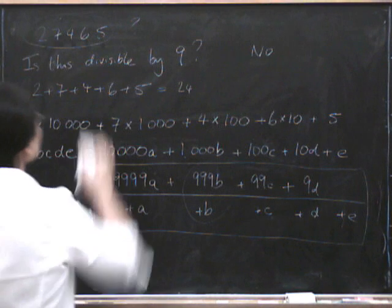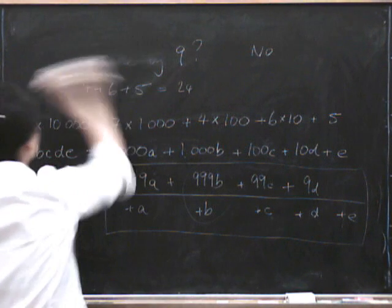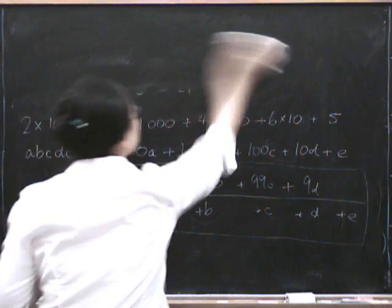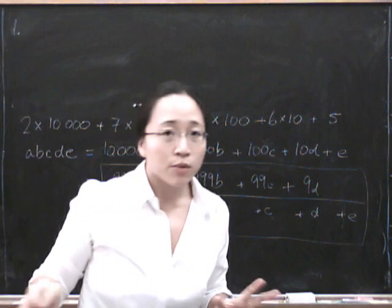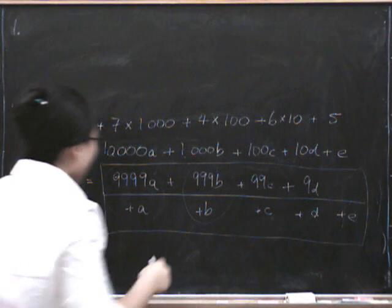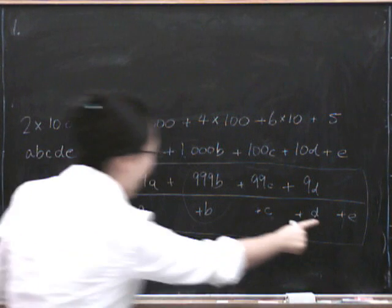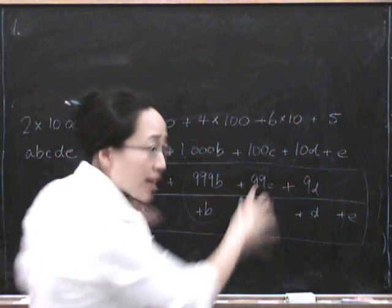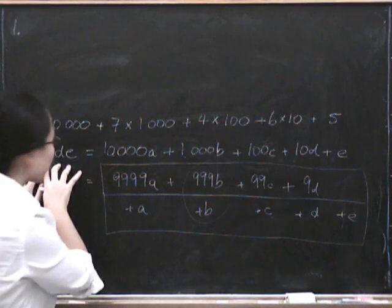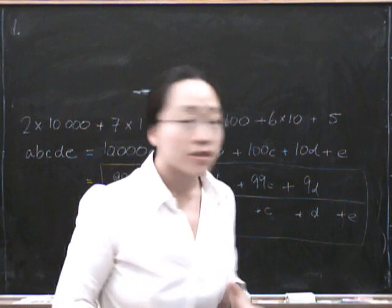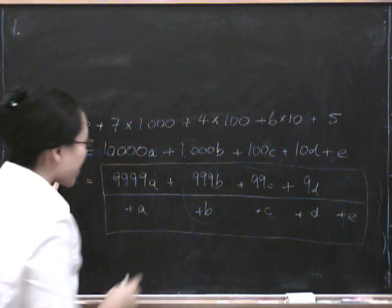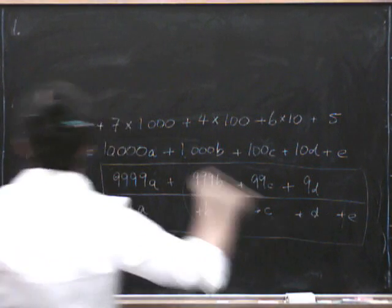So first of all, let's see, 1. So we need to show two things, right? We want to show first of all that if this sum A plus B plus C plus D plus E, if that is divisible by 9, then this one is. And we also want to show the converse, which says that if this is divisible by 9, then that is divisible by 9.